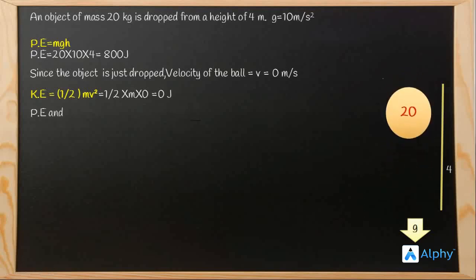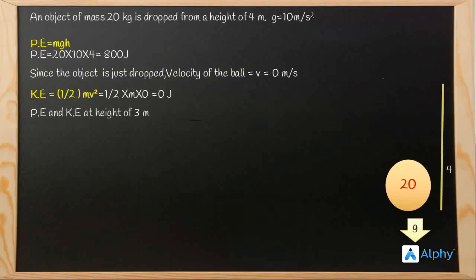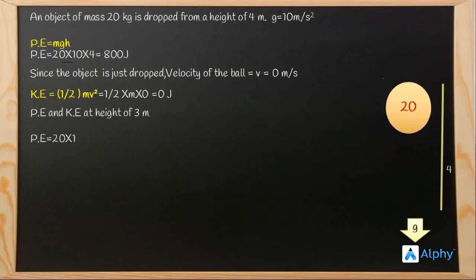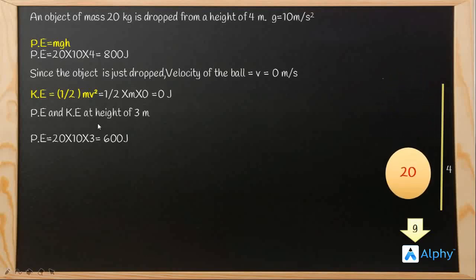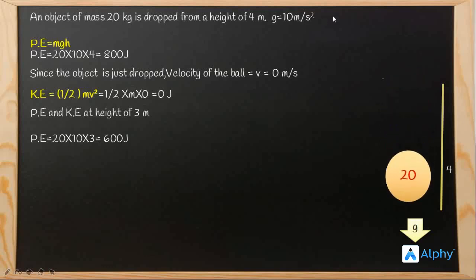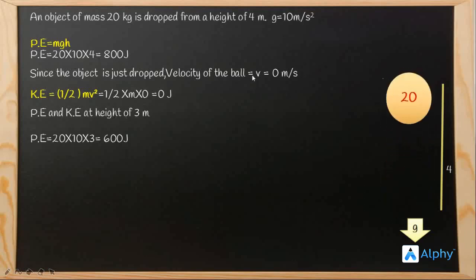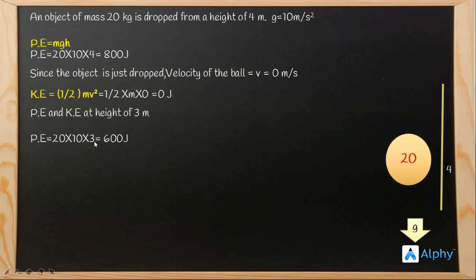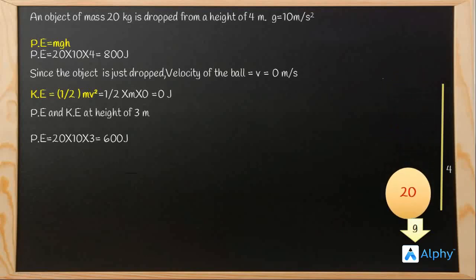Now, if we find the potential energy and kinetic energy at a height of 3 meters: potential energy equals mgh, that is 20 × 10 × 3, which is 600 joules. Only the height changed from 4 meters to 3 meters; the mass is still 20 kg and g is still 10 m/s², giving us 600 joules.